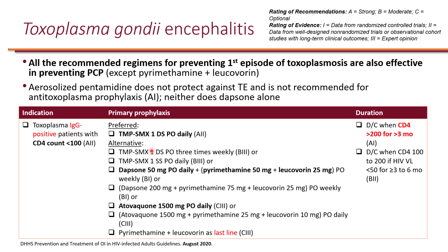The preferred agent for Toxoplasma prophylaxis is also Bactrim — one double-strength tablet once daily. If not tolerated, a lower dose including three-times-weekly dosing may be an option. Alternatives include dapsone in combination (not monotherapy, which is ineffective), and atovaquone (taken with food). Prophylaxis is continued until CD4 is greater than 200 for at least three months once ART is started.